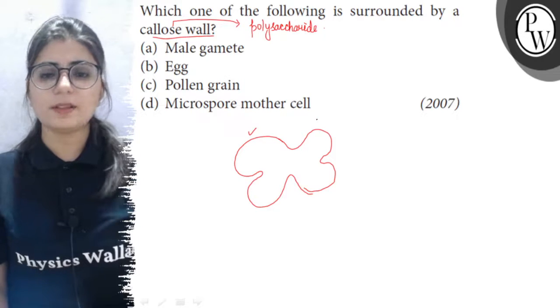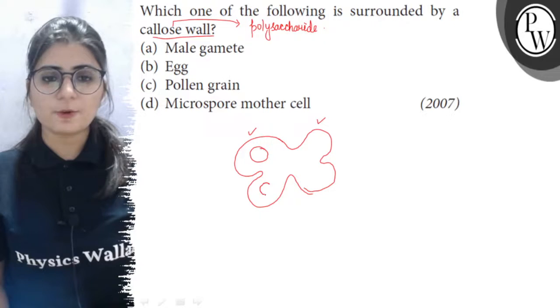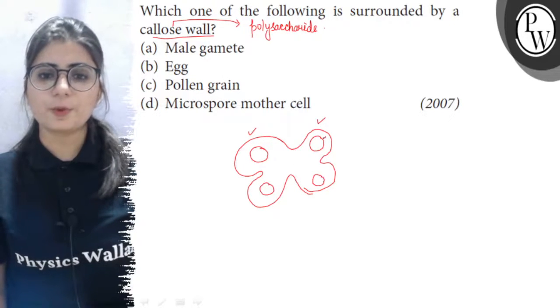This is one lobe and this is second lobe and at the corners, you will find special pouches which are called pollen chambers or microsporangia.